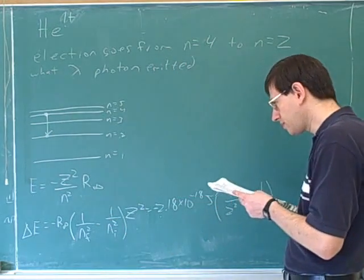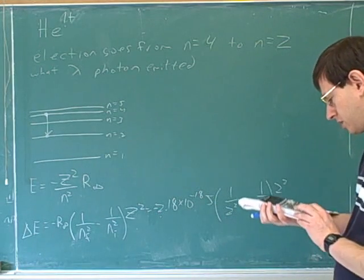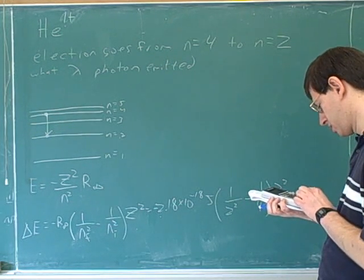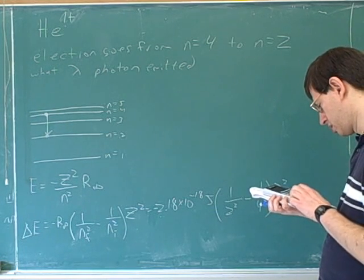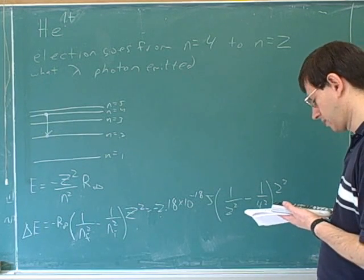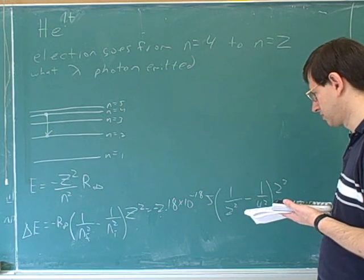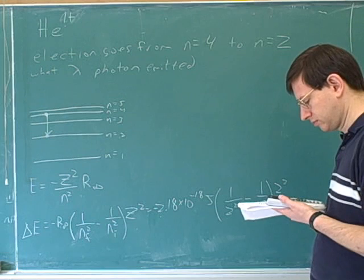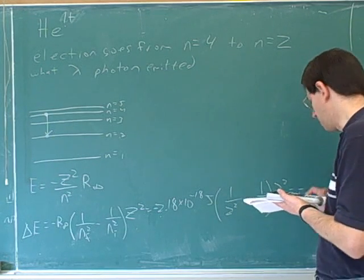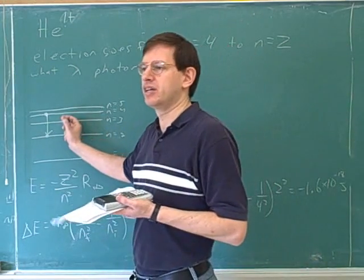So, and then Z here would be 2². So let's see if we get the same thing. All right. Okay. So this does come out to be negative 1.6 × 10⁻¹⁸ joules. It makes sense that it's negative because we're losing energy. As we go from here to here, we're losing energy.